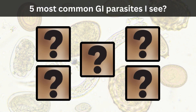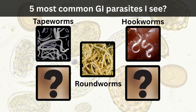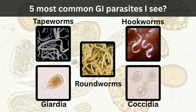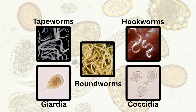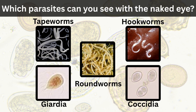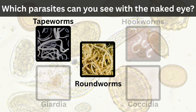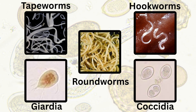Quick quiz question: What are the five most common parasites I see in practice that affect a cat's digestive tract? The answer — roundworms, tapeworms, hookworms, giardia, and coccidia. Now, when I say worms or parasites, many cat parents expect to see them, which is not always the case. You can only see roundworms and tapeworms easily. The rest require a microscope.